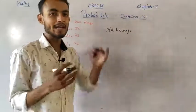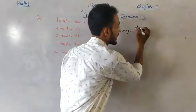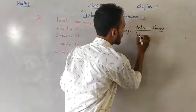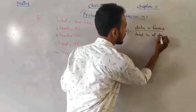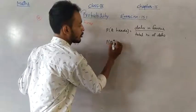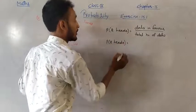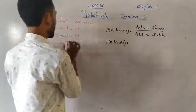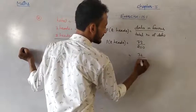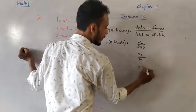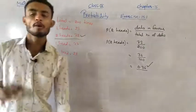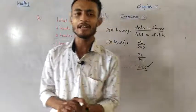Probability of two heads: data in favor (two heads) = 72; total = 200. So probability = 72/200 = 36/100 = 0.36. This is the probability of two heads. Probability chapter is a very easy chapter — questions are solved the same simple way.